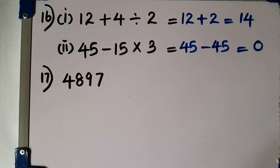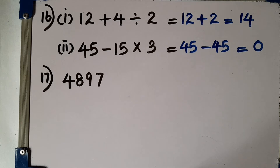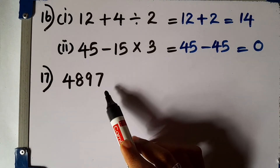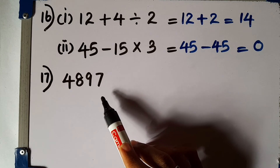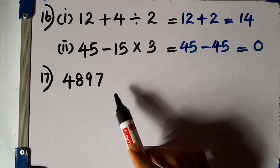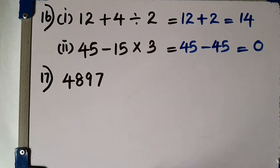Question number 17. Is the number 4897 divisible by 3? Give reasons. The sum of the digits should be checked. The last digit is 7, and it is not a multiple of 3, so this number is not divisible by 3.